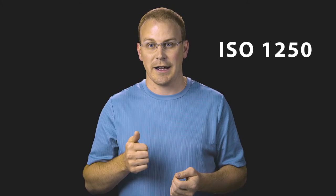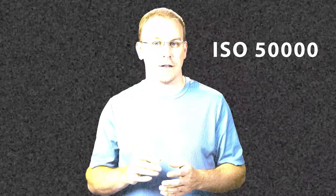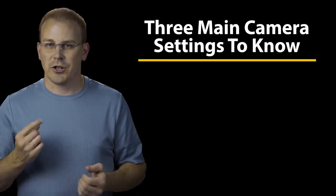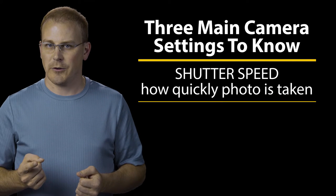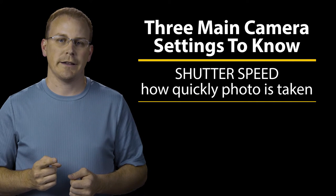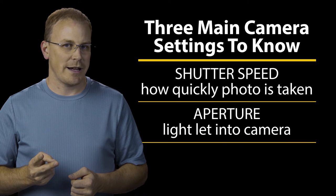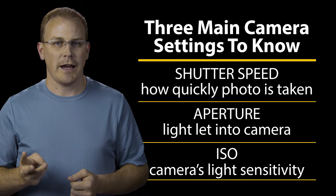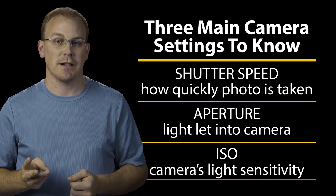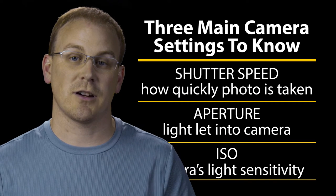And finally there's ISO. ISO is the camera's sensitivity to light. A low ISO value makes for a darker image and a high ISO number makes for a brighter image. The key is to not go too high on the ISO because a really high value can actually add visible noise and grain to the image. To recap: shutter speed is how quickly the camera takes a photo and is the most important setting to dial in; aperture is how much light is let into the camera; and ISO is the camera's overall sensitivity to light.